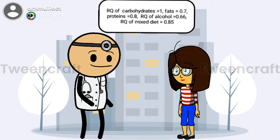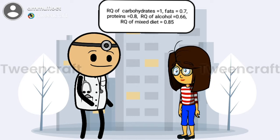Sure sir. So RQ of carbohydrates is 1, for fats it is 0.7, for proteins it is 0.8, for alcohol it is 0.66, and for mixed diet it is 0.85.